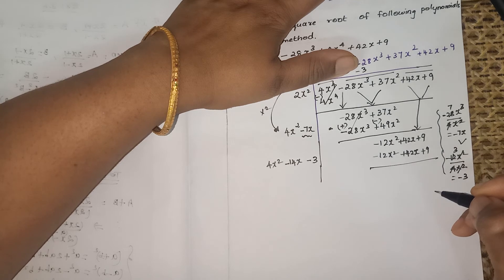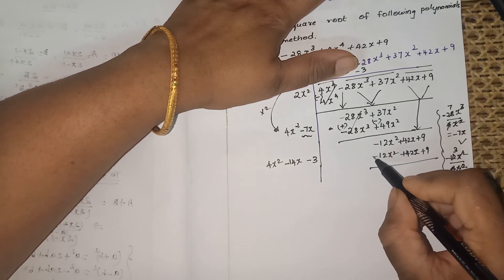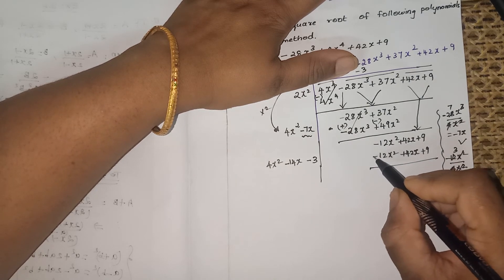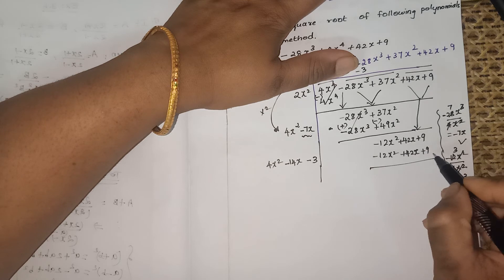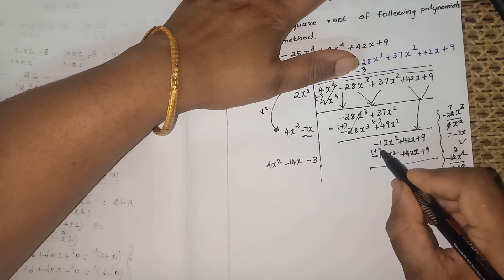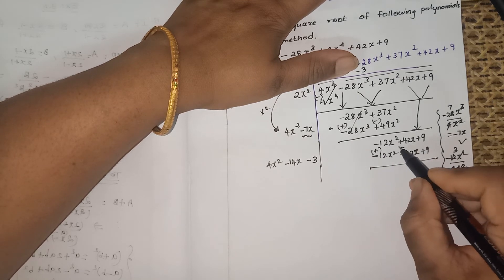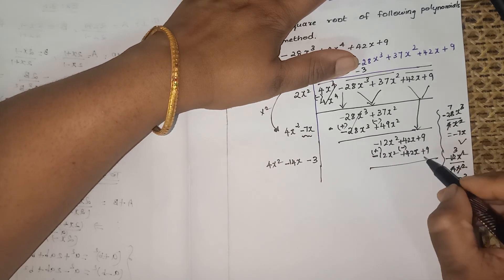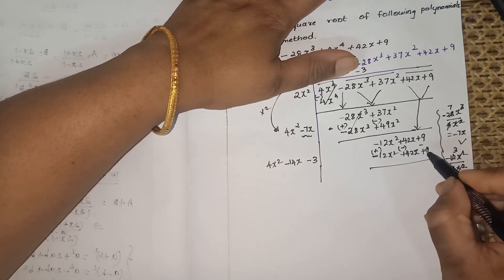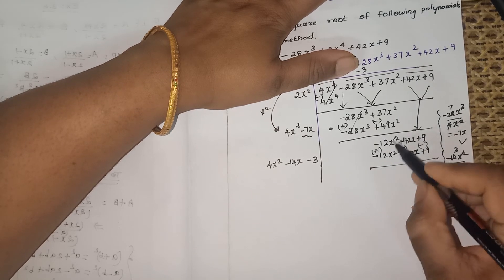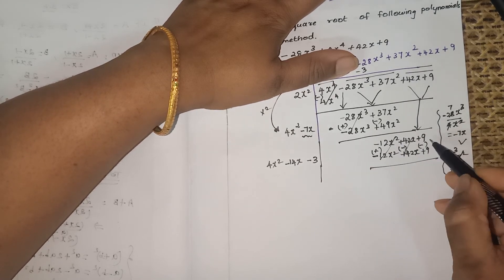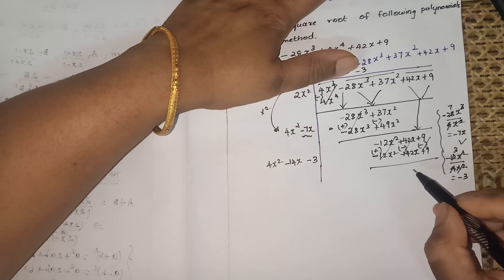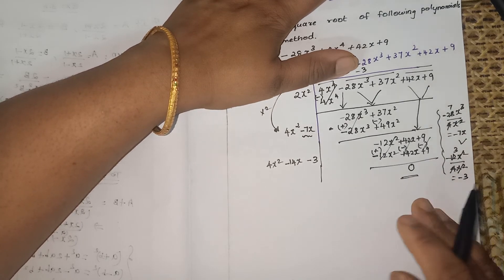Now multiply minus 3 into all three terms of the divisor: minus 3 × 4x² = minus 12x², minus 3 × minus 14x = plus 42x, and minus 3 × minus 3 = plus 9. Subtract: minus 12x² + 12x² = 0, 42x minus 42x = 0, 9 minus 9 = 0. The remainder is 0.